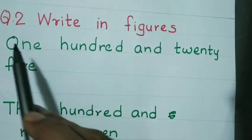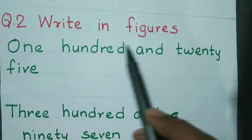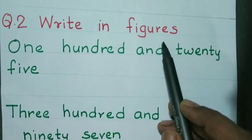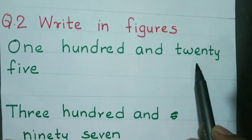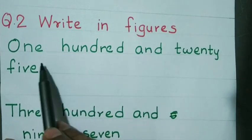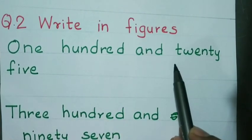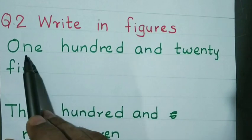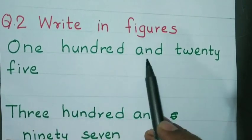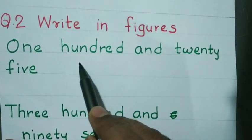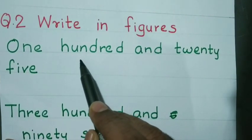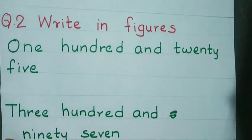Question number 2: Write in figures. The number has been given in words and you have to write the figure of the given number. 100 and 25. Since 100 is there, it means 3 places are there. Write the 3 places.